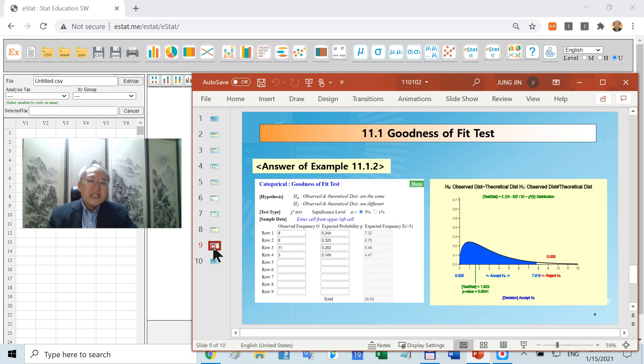You can practice with ESTAT. Why don't you do it yourself? You enter the observed frequency and expected probability here. Then it will calculate every statistic. The test statistic is located here. This is the critical line. Therefore, you cannot reject H0.